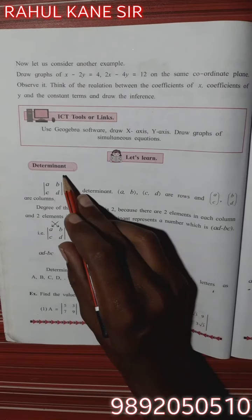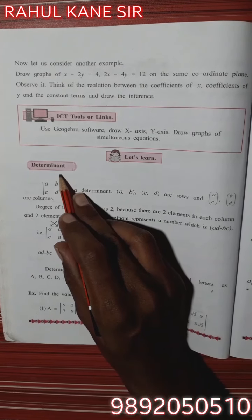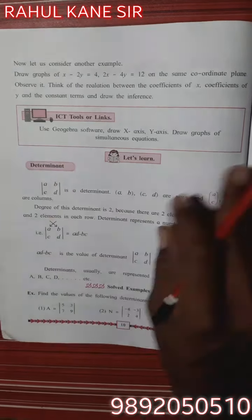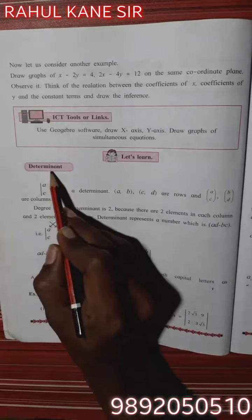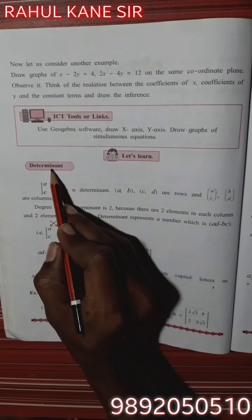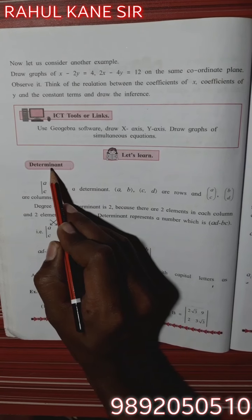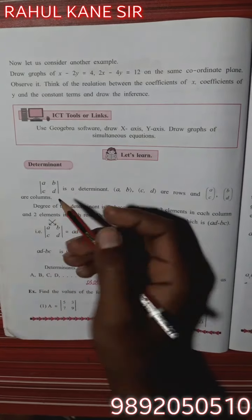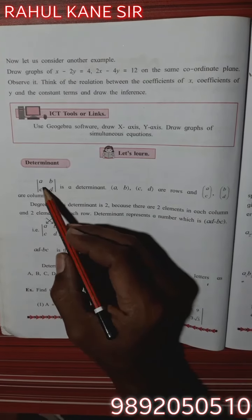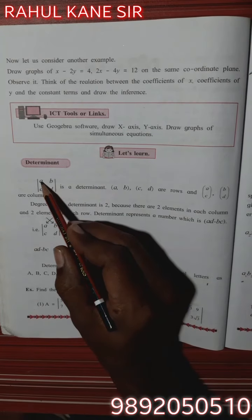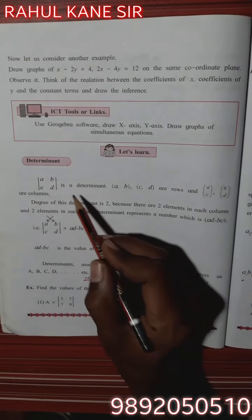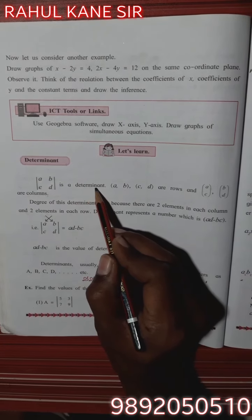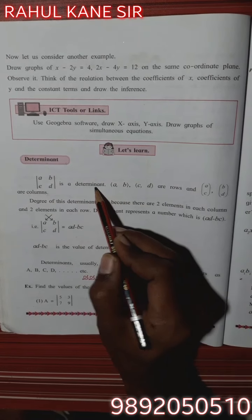Today we are going to start the next part of our first chapter, that is the determinant method. The determinant method is also called a grammar rule. See page number 10. A, B, C, D is a determinant.